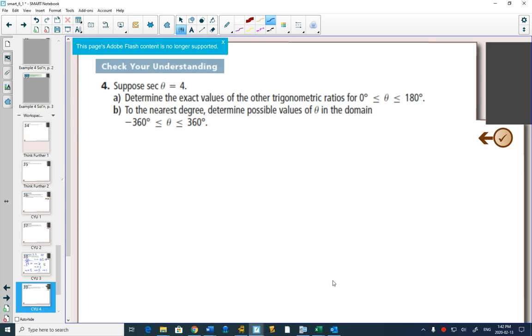Suppose secant of theta is equal to 4, and then you have to determine all the other ones. So the question is, secant theta is 4? What's tan of theta? What's sine of theta? What's cos of theta?